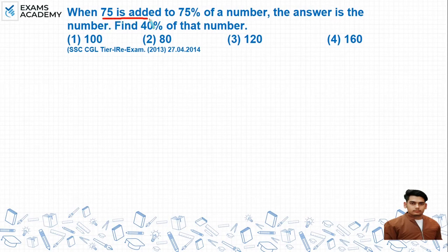The question is: when 75 is added to 75% of a number, the answer is the number. Find 40% of that number. The question says if there's a number and we add 75 to its 75%, we get the same number back.